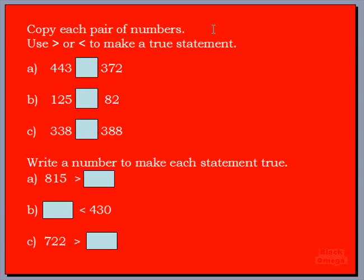Let's look at the first one together — 443 on the left, 372 on the right. Think about putting these in a place value chart. Our first number has four hundreds and the other number has three hundreds, so we know right away that 443 is greater than 372.